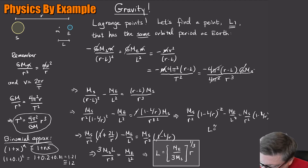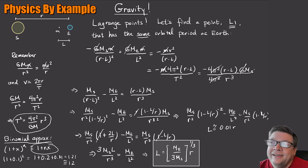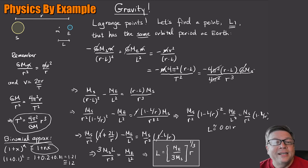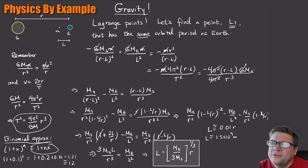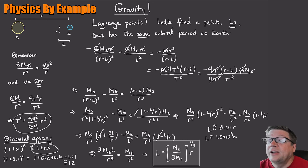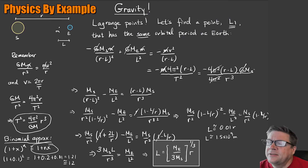Plugging in the numbers for the mass of the Earth and mass of the Sun, l comes out to be about 0.01 times R — roughly one hundredth of the distance to the Sun. That's the first Lagrange point, L1, at about 1.5 × 10⁹ meters, or 1.5 million kilometers — about four times farther than the Moon.